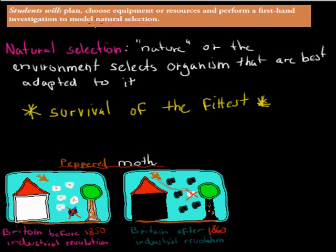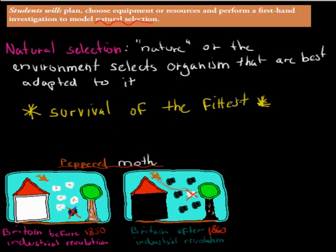We need to go over what the word natural selection means. Natural selection was just nature, or the environment, selecting organisms — anything that's living — that are best adapted to it, or best suited to that environment. So it's another word for survival of the fittest.